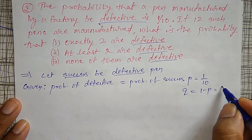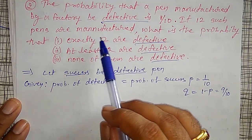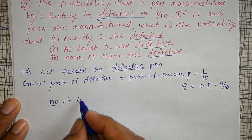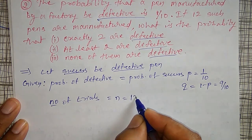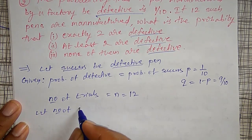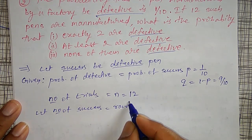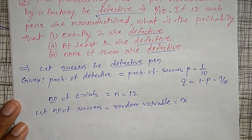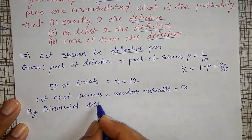Therefore Q is equal to 1 minus P, that is 9/10. And 12 such pens are manufactured, therefore the number of trials n is equal to 12. Let the random variable X be the number of successes.